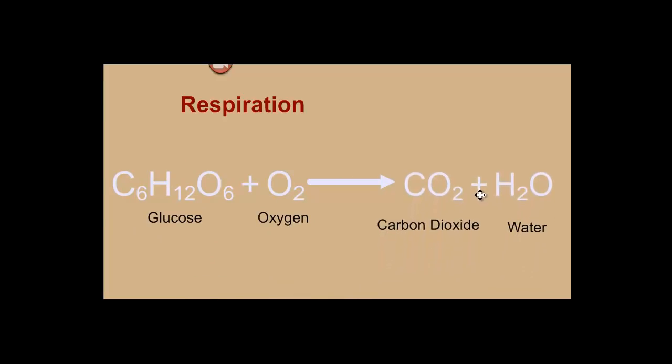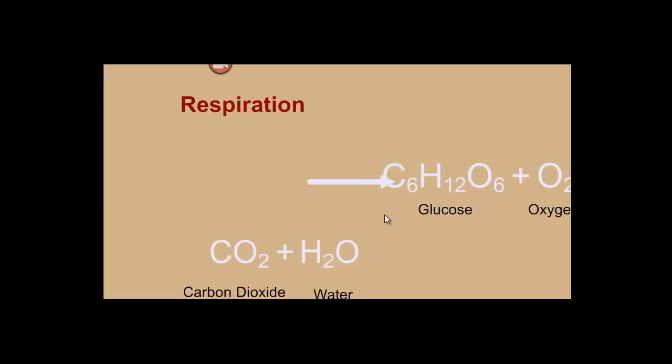So the equation, because you need to memorize the equation, looks the same. The only difference is this time we put our glucose on the left. So glucose and oxygen produce carbon dioxide and water. And it's a cycle. And we'll talk more about this when we talk about ecology. But if you go back and look at your equation for photosynthesis, you'll notice it's the exact same things. Glucose, oxygen, carbon dioxide, and water. The only difference is which side of the equation they're on.